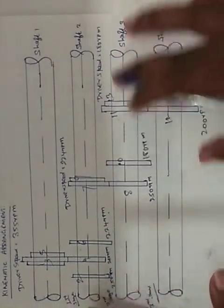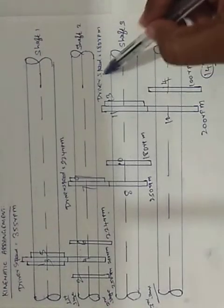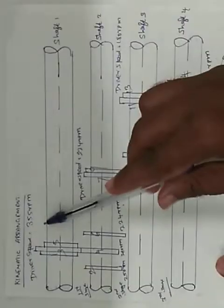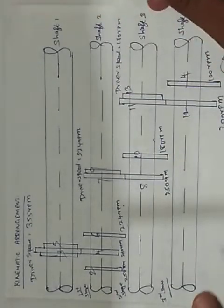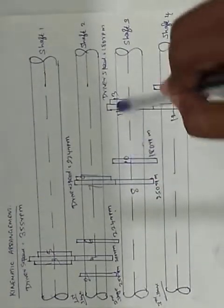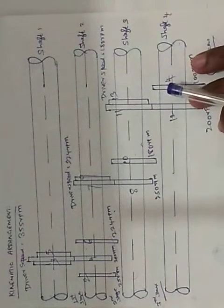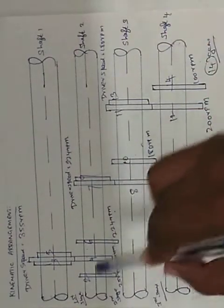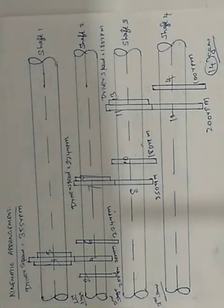In the 3-stage arrangement, each shaft carries driver and driven gears. The output shaft delivers speeds 1 through 12: positions 1, 2, 3, 4, 5, 6, 7, 8, 9, 10, 11, 12 — all 12 output speeds of the gearbox. This completes the ray diagram and kinematic arrangement for the 12-speed gearbox problem. We will discuss further in the next video — thank you.